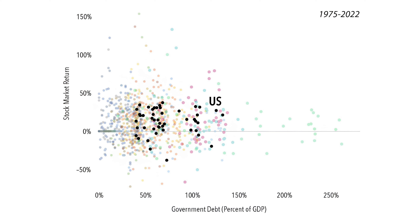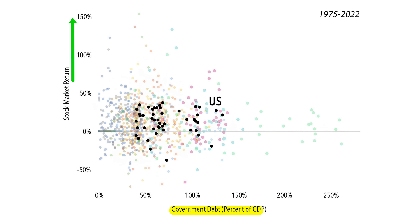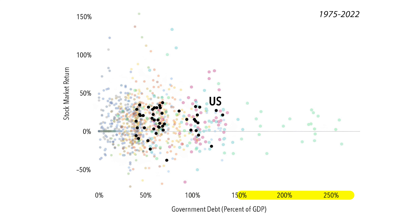This chart goes back to 1975 and shows stock market return on the vertical axis, ranging from negative 50% to 150% on an annual basis. On the horizontal axis we have government debt as a percentage of GDP — meaning how much a country owes versus how much it produces — ranging from 0% up to 250%. So how do markets perform given the level of country debt, including the U.S.?